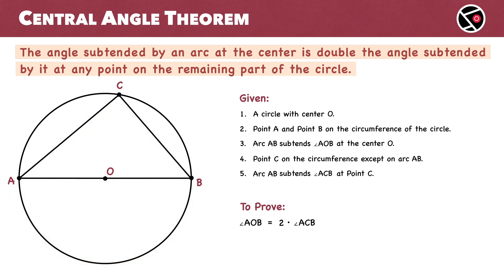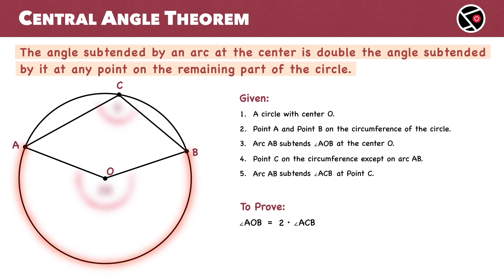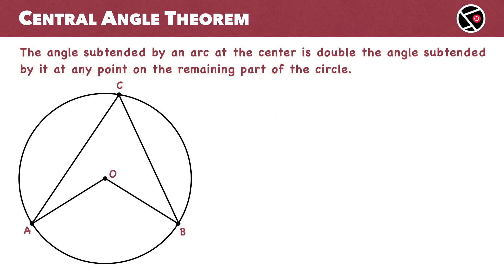Now, if AB becomes a major arc, the angle subtended at the center — the reflex angle AOB — is still twice the angle subtended at point C. With this understanding, let's now move to the proof.